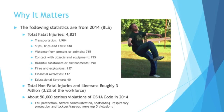Why does it matter? Here are some interesting statistics from 2014, collected from the Bureau of Labor Statistics. In 2014, 4,821 people died due to work-related injuries. Breaking some of those down: transportation killed 1,984 people; slips, trips, and falls killed 818.